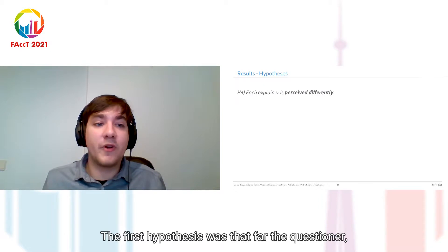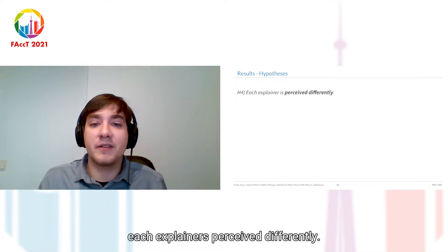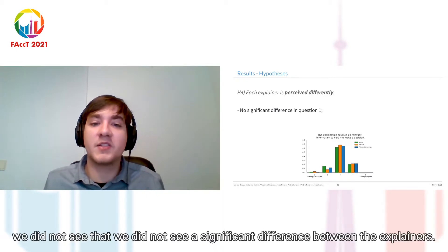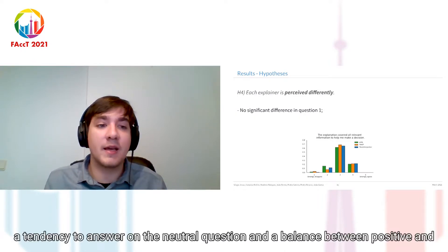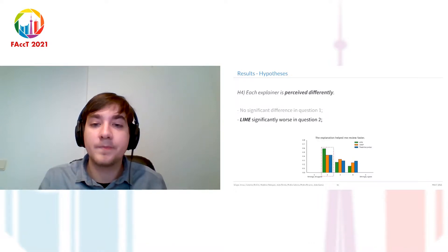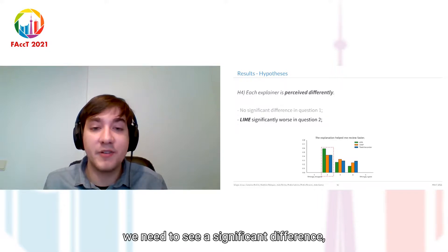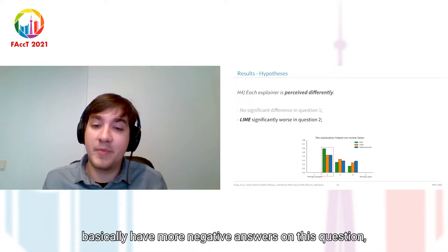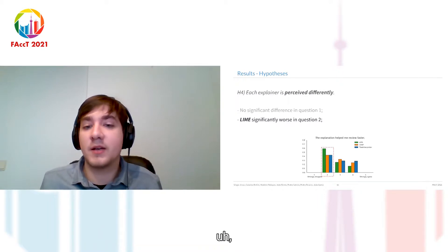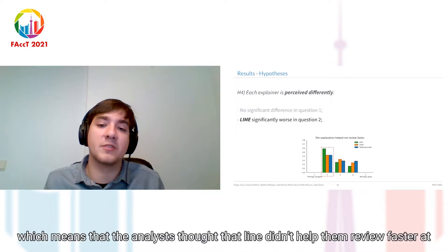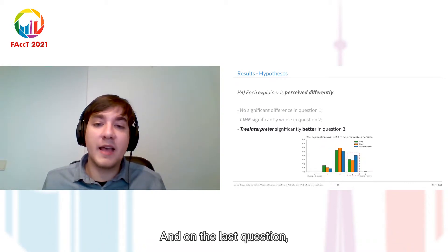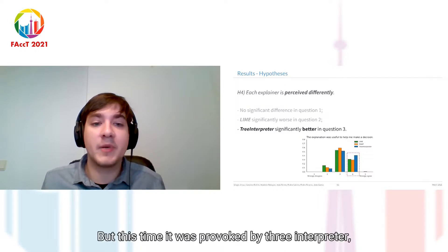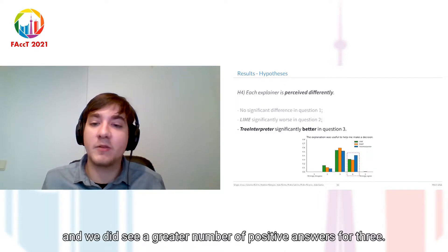The fourth hypothesis was that each explainer would be perceived differently in the questionnaire. On the first question, we did not see a significant difference between explainers — we observed a tendency toward neutral answers and a balance between positive and negative responses. On the second question, we did see a significant difference, provoked by LIME: LIME had more negative answers, meaning analysts felt LIME did not help them review faster. On the third question, a significant difference was again observed, this time provoked by TreeInterpreter, which received a greater number of positive answers.